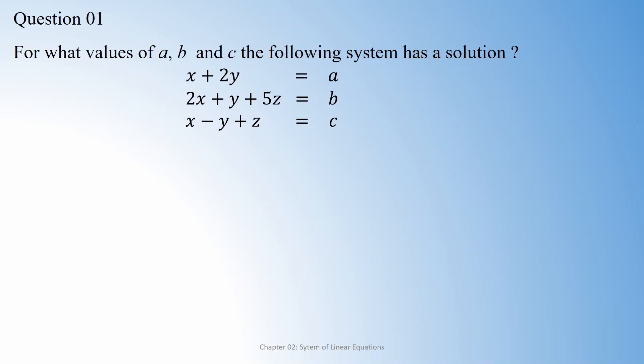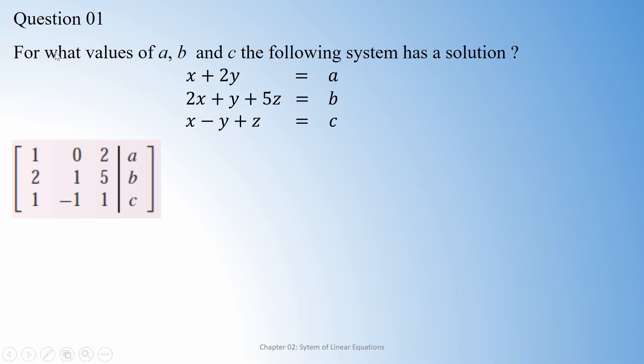Suppose we are given a linear system where a, b, and c are some given constants. We want to see for what values of a, b, c the system has a solution. To decide the solution, we have to start with the augmented matrix and then convert this augmented matrix into its row echelon form.